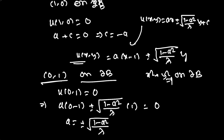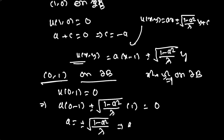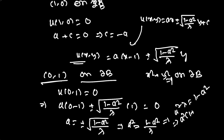Squaring both sides: a² = (1 − a²)/λ, so a² · λ = 1 − a², giving a²(1 + λ) = 1. Therefore a = ±√(1/(1 + λ)), and since a = ±√((1 − a²)/λ) as well, both terms equal the same value a.